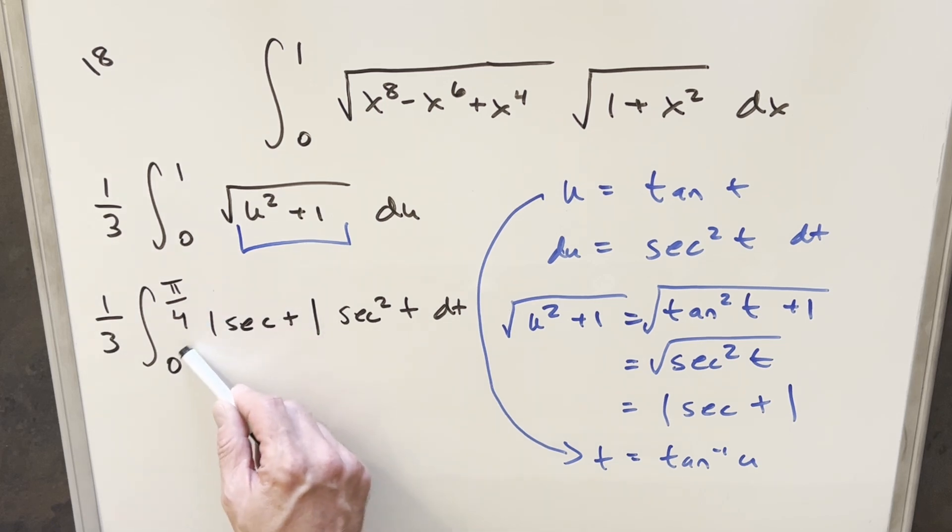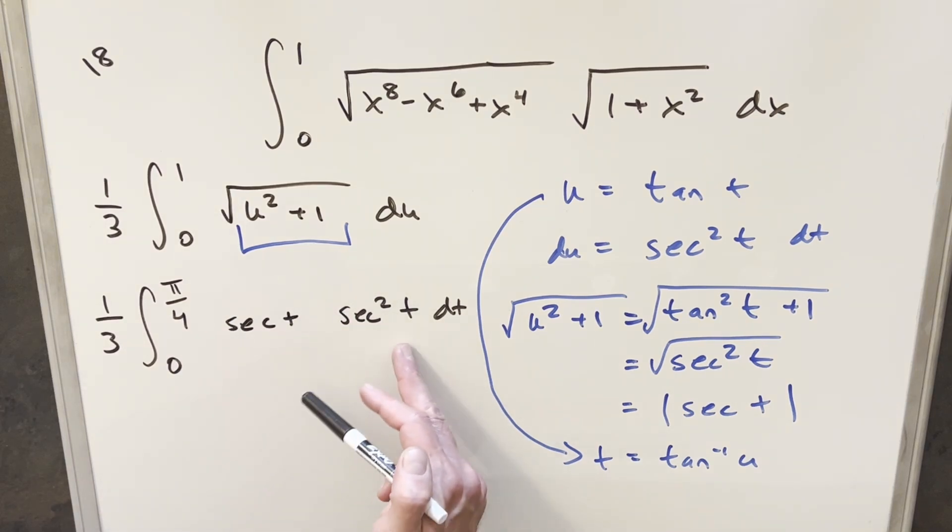But noticing our bounds, 0 to pi over 4, this is all in the first quadrant. So secant is always going to be positive there. So I'm just going to drop my absolute value here. And then multiplying secant t times secant squared t, we're just going to have secant cubed of t.